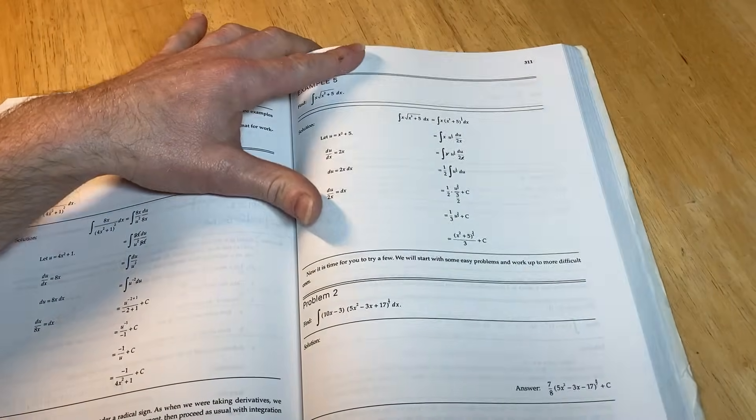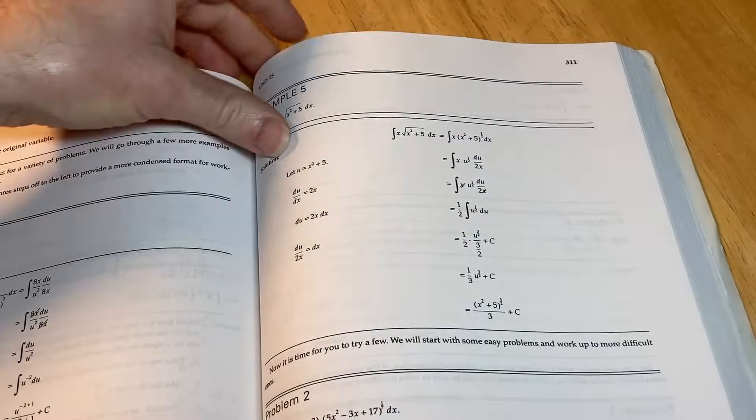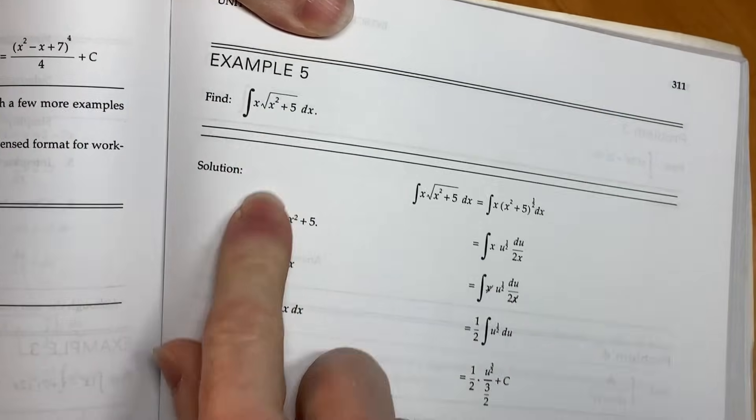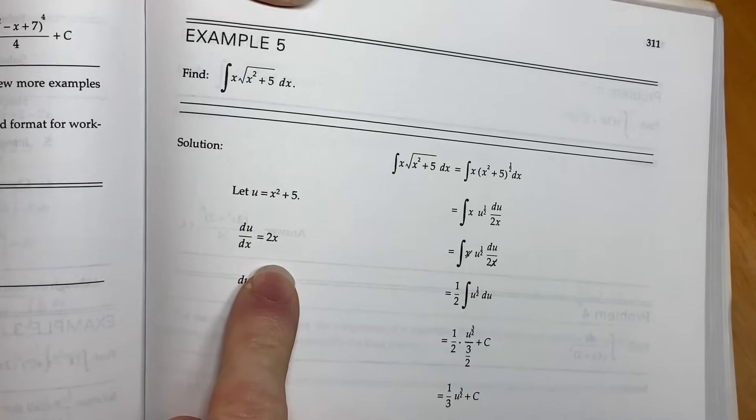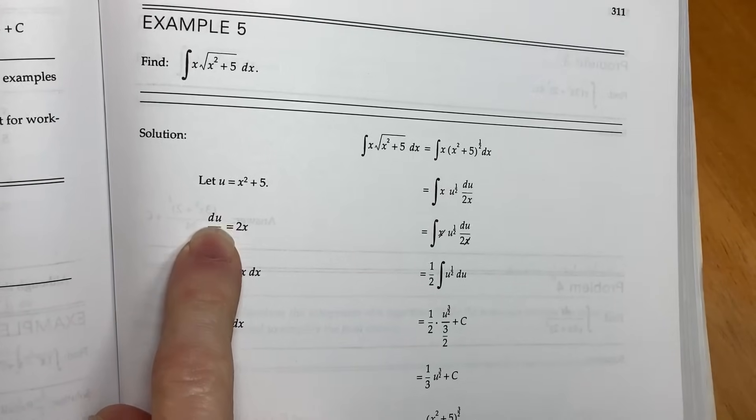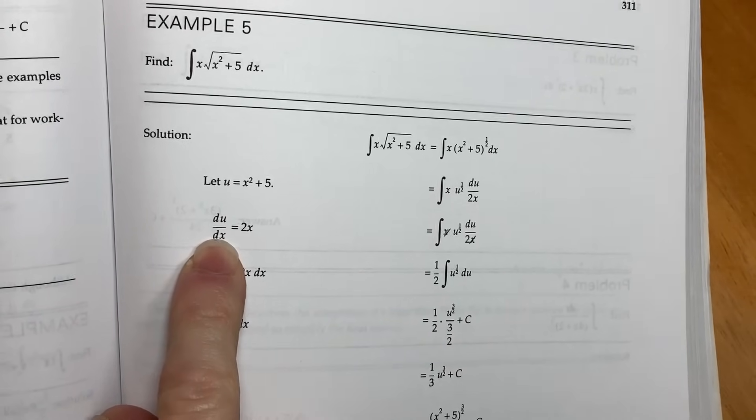Here's a good example of a u-substitution problem. So this is something that you would see in a calc one course. So they set u equal to x squared plus five. They take the derivative. Now they do it a little bit differently. They use regular derivative notation, du/dx.